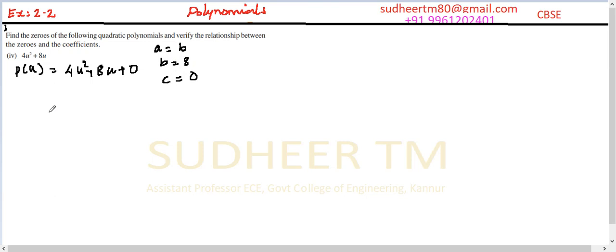To have the zeros, we must equate this polynomial to 0. 4u square plus 8u is equal to 0. 4u is common factor.